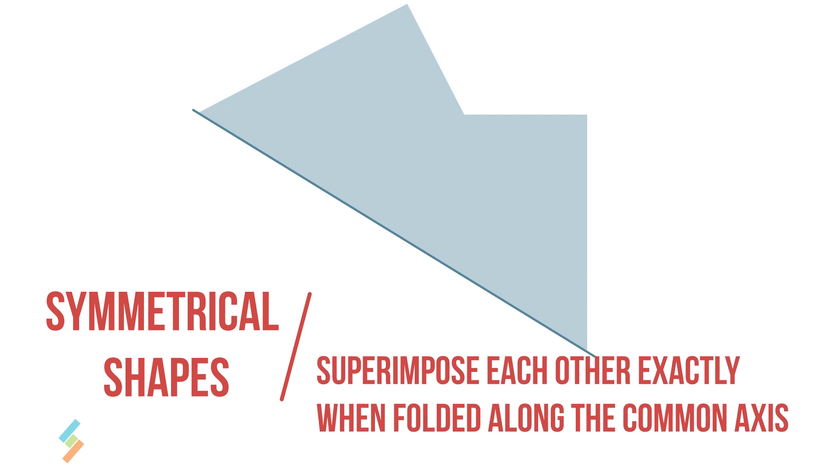Now, let's flip this page diagonally. Observe the two parts carefully. They are not symmetrical because they do not superimpose each other along the axis. Hence, the diagonal is not the line of symmetry for rectangular figures.